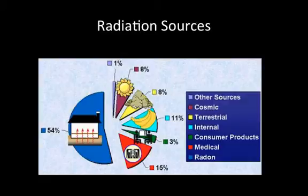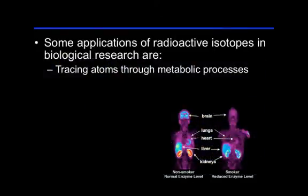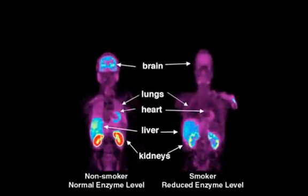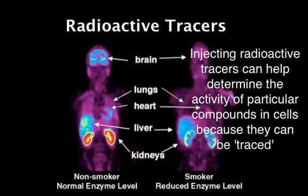Radioactive isotopes — or radioisotopes for short — have many useful applications in biology. Because they're detectable with the right instruments, radioisotopes are useful as tracers to find out how a living thing processes certain compounds.